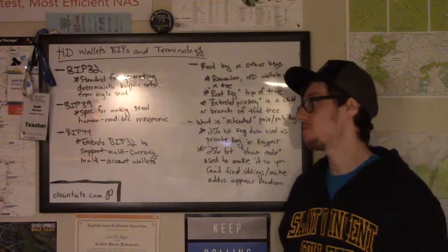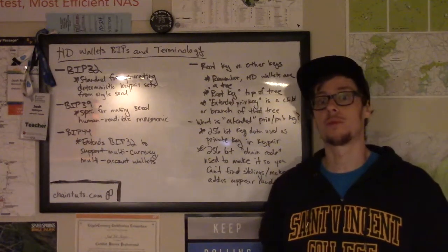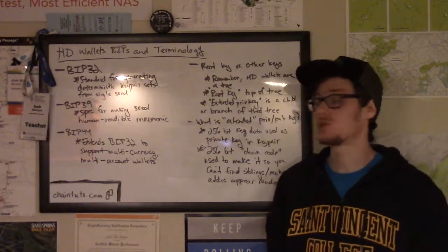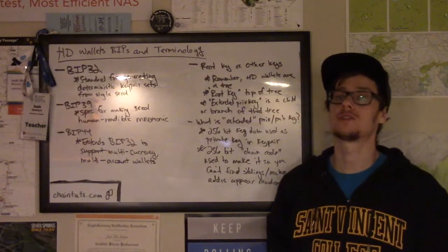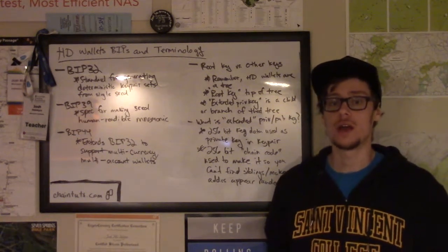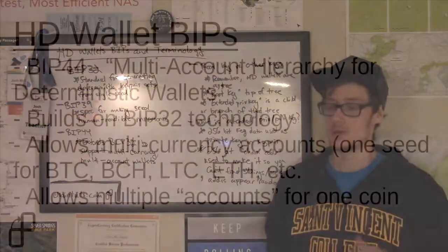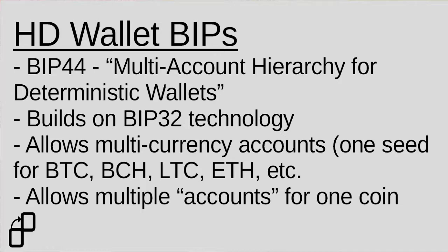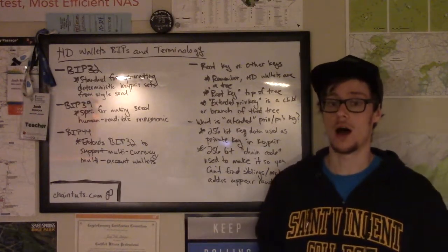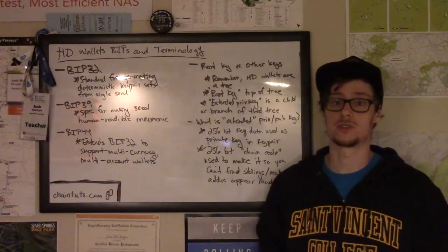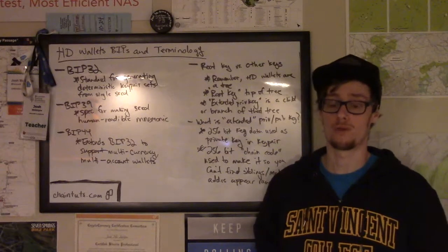The next important BIP is BIP 44. This improvement proposal extended the work of BIP 32 to support multi-currency and multi-account wallets from a single seed. If you've ever used a multi-currency wallet like Coinomi, this is the BIP that enables that. You can start with a single wallet seed and have it support multiple cryptocurrencies — Bitcoin Cash, Ethereum, Bitcoin, Litecoin, and many others. Any cryptocurrency can register a new part of this standard, and thousands of cryptocurrencies use BIP 44 for generating HD wallets.